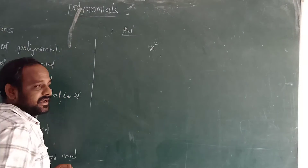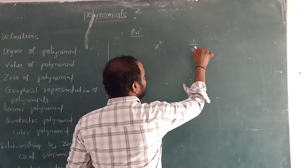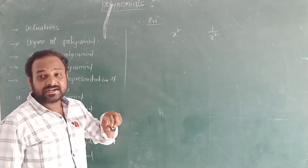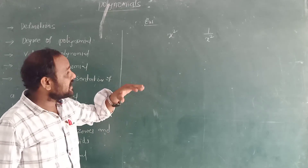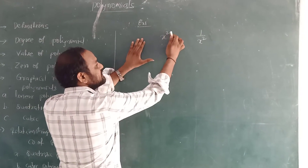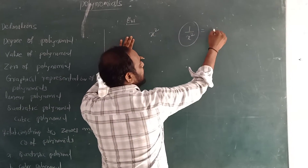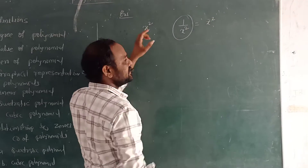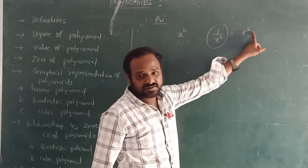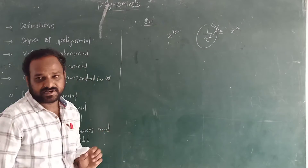Here x² is a polynomial. But if you take 1 by x², what about this — is it a polynomial or not? It is not a polynomial, because it has a negative integral power. Here power means x power 2; when we change 1 by x² it becomes x power minus 2, meaning it has a negative integer as a power. That is why it is not a polynomial.